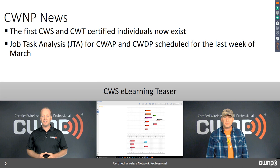Additionally, the job task analysis for CWAP and CWDP is scheduled for the last week of March. We'll come out of that JTA with everything we need to rebuild CWAP and CWDP, and in the summer we'll see new versions of these certifications being released.